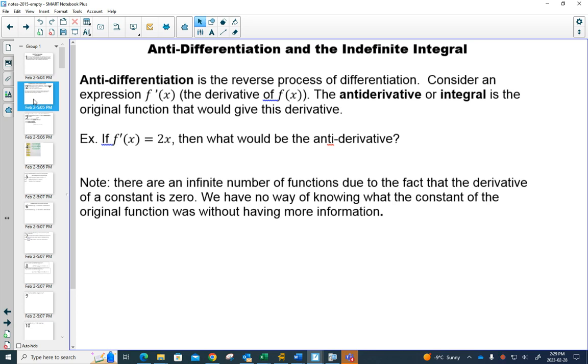If the derivative was 2x, what could possibly be the original function? Well, it could be x squared. That's one possibility. That's not the only possibility. Can you see that it could also be x squared plus 5? Or plus 51? Because when you take the derivative of a constant, it would go away.